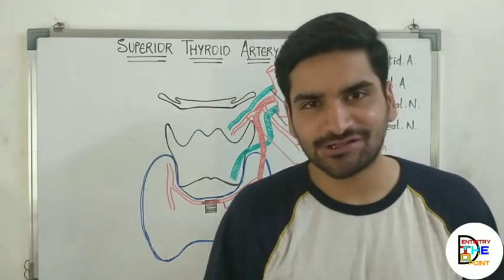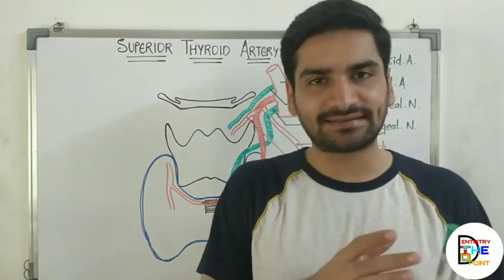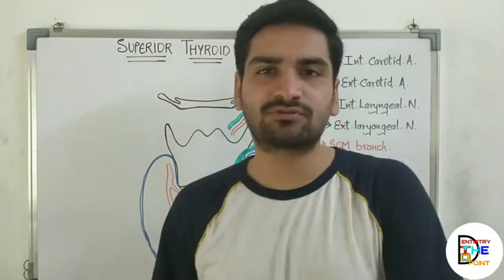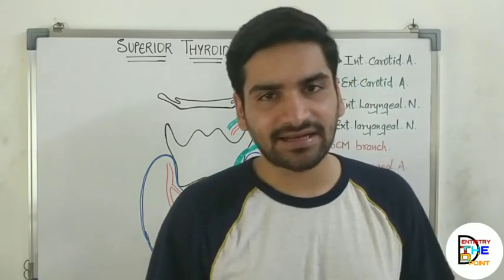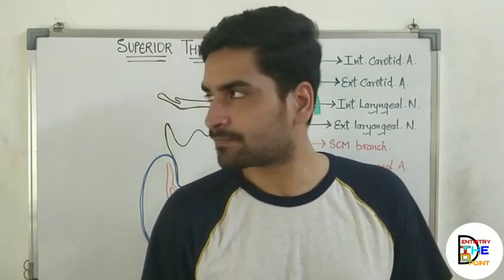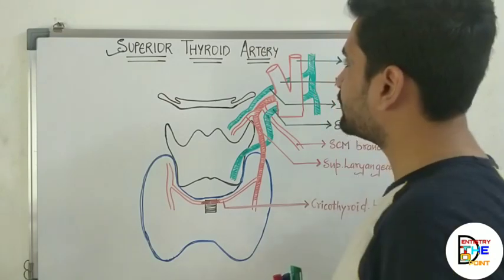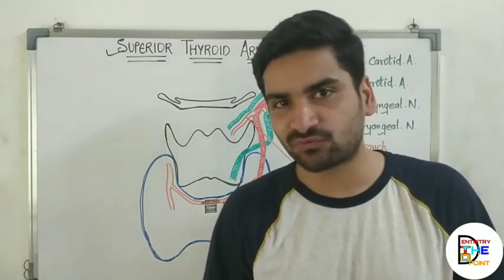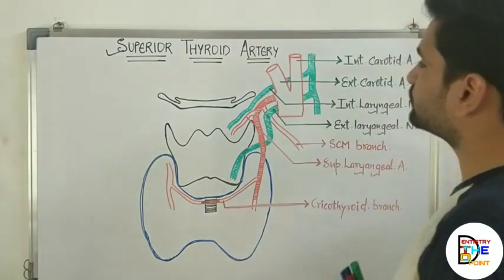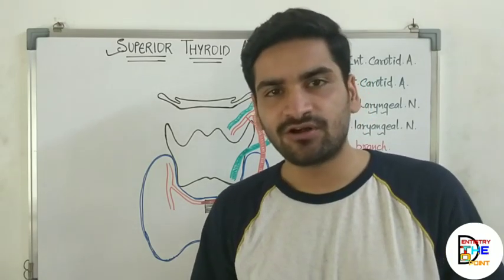Hi everyone, welcome back to our channel 'Dentistry to the Point.' This is Dr. Dhrumal Manik. As I said in the previous video, we discussed a brief introduction about the external carotid artery and its various branches in anterior, medial, posterior, and terminal divisions. I hope you guys remember the mnemonic 'She Likes Friends Always Over Mother Father And Mama Papa And Sister.' If you have not watched that video, I would suggest you watch it first and then continue with this video.